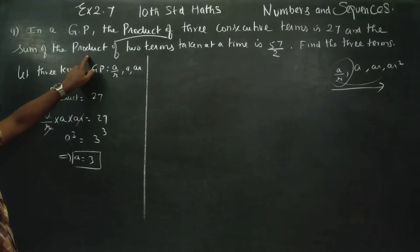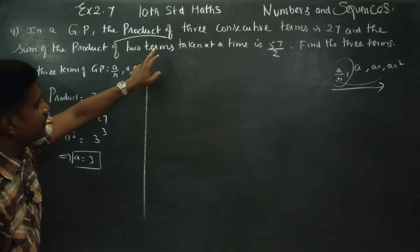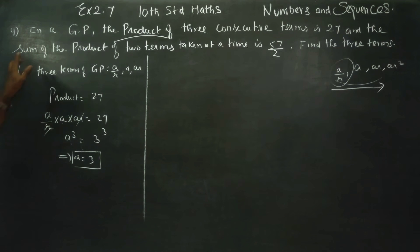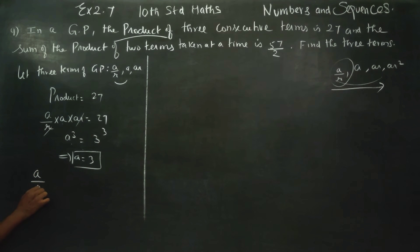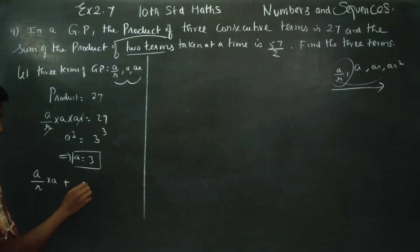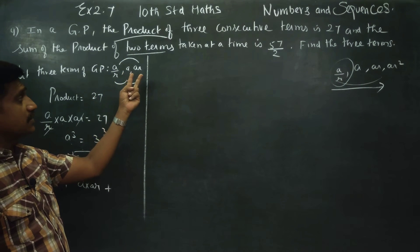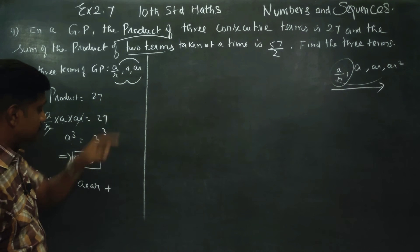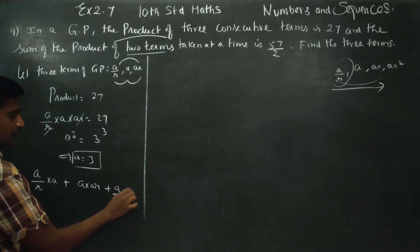Product of two terms taken at a time. The sum of products of two terms taken at a time: first and second, second and third, and first and third. A into AR, plus A by R into AR, is equal to 57 by 2.